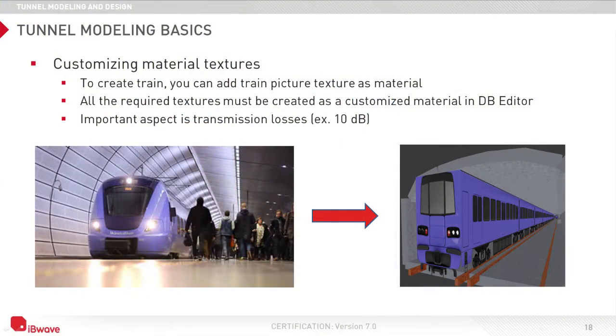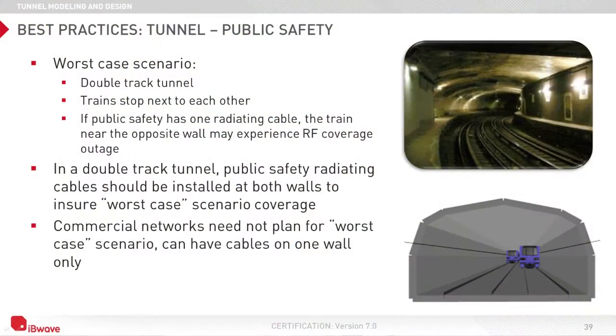That pretty much covers the stadium aspect. What we do in Day 2 is look at another tricky environment to model, especially in 3D, which is tunnels. We give tricks and guidance as to how to model a tunnel in a very efficient way. On top of that, we look at design criteria and methodology for a design that covers public safety — looking at different aspects with radiating cables on both ends, train in one direction and two directions, to get an idea as to how this can be done efficiently while still meeting requirements for different technologies, public safety being one of them.